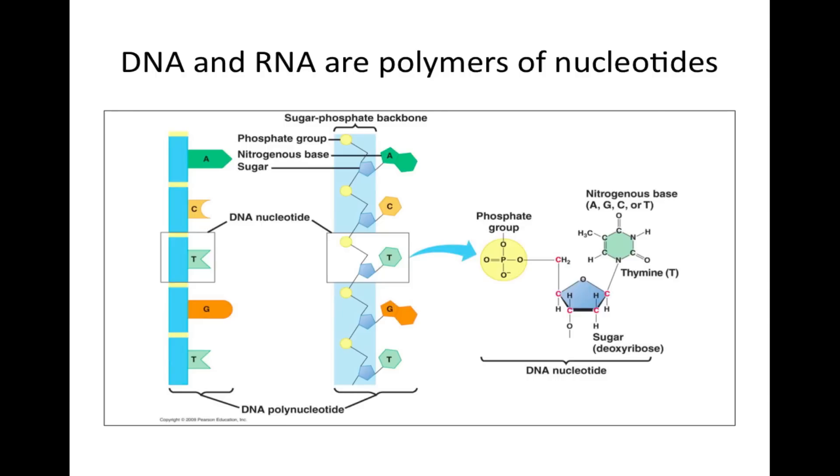DNA and RNA are polymers of nucleotides. A DNA polynucleotide is a long chain of DNA nucleotides held together by a sugar phosphate backbone. The sugar phosphate backbone is the sugar and phosphate group of each individual nucleotide. A DNA nucleotide consists of a phosphate group, a sugar, and a nitrogenous base.